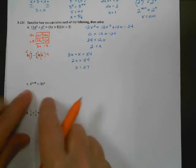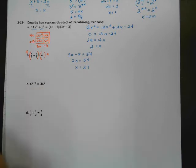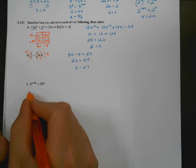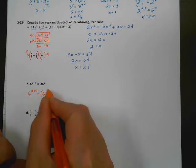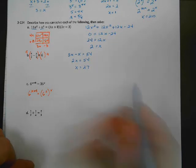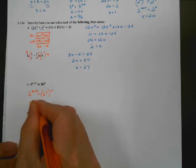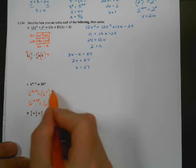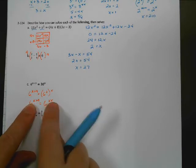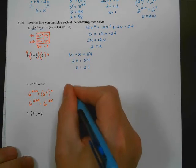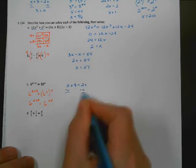Next one: I want to look inside. I've got a 6 and a 36 — they're not the same base, but 36 is a power of 6. So I change 36 to 6 to the 2nd power raised to the x. Power to a power: I get 6 to the x plus 9 equals 6 to the 2x. Now both have a base of 6, so the exponents must be equal: x plus 9 equals 2x. Subtract x from both sides and x equals 9.